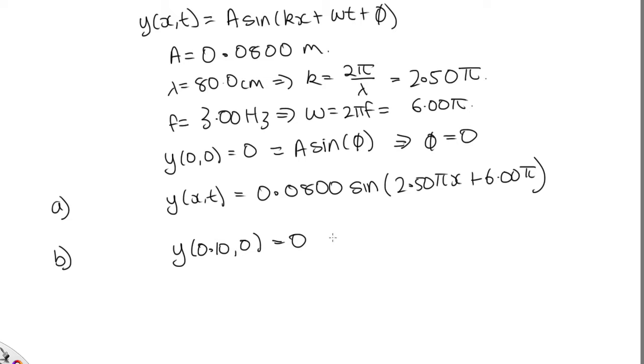OK, so what this tells us is that this is equal to A sine of kx plus phi. Now k is 2.50 pi and x is 0.10. Now t is 0, so this term is unimportant.